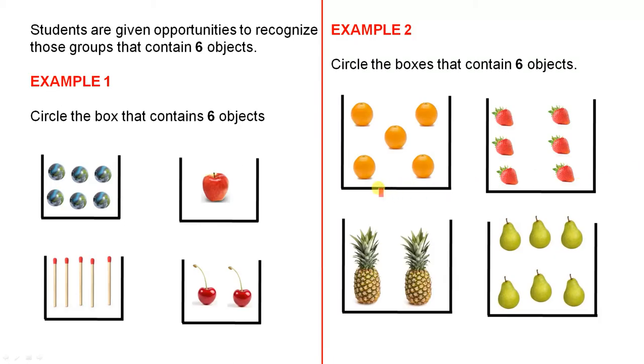Students are given opportunities to recognize those groups that contain 6 objects. First example, circle the box that contains 6 objects. So if you ask students to do that, then they probably will know that there's only one box and they'd be correct because they will be circling that box there.